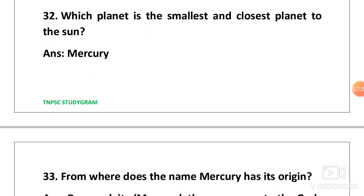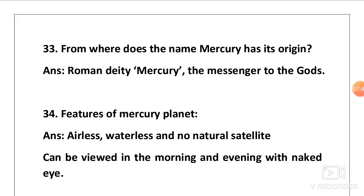Next one, that is very important question. Which planet is the smallest and closest planet to the sun? Answer is Mercury. Remember the sequence. Mercury, Venus, Earth, Mars, Jupiter, Saturn, Uranus and Neptune. The closest planet is Mercury and it is also the smallest one.